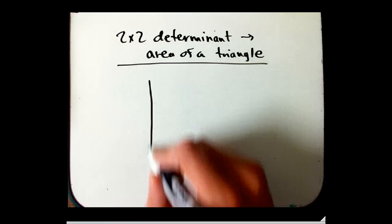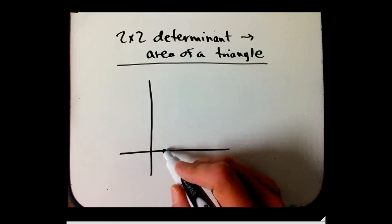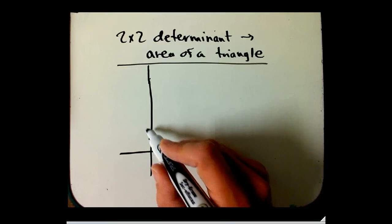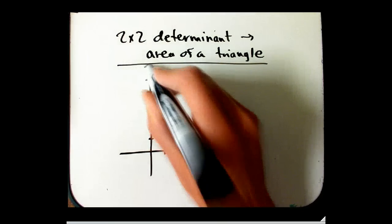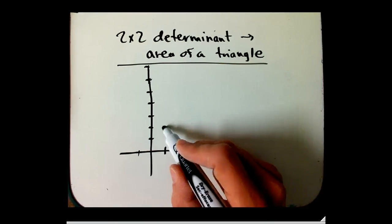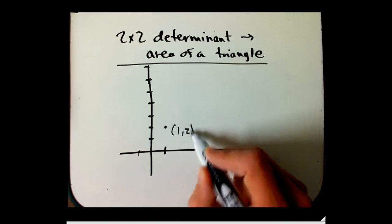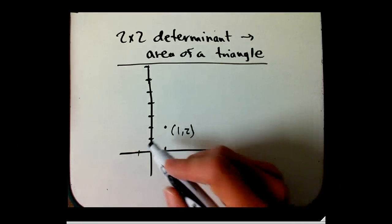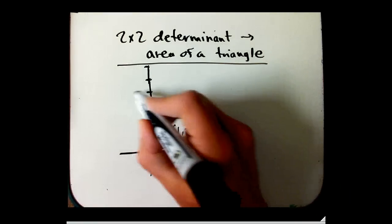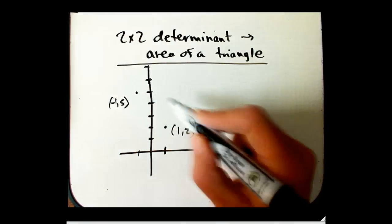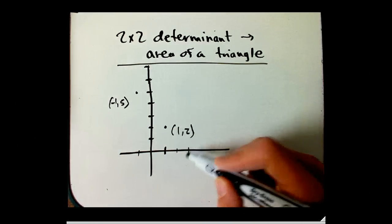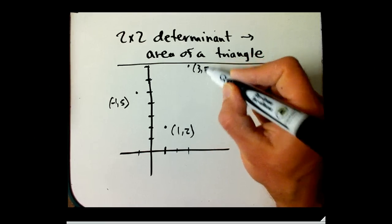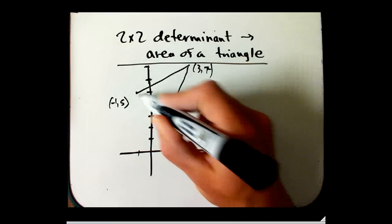So, let's say we have the triangle, let's say one of the vertices is at 1,2, and another vertex is at, say, minus 1,5, and the other one is at 3,7.